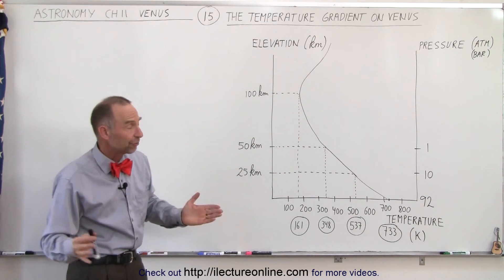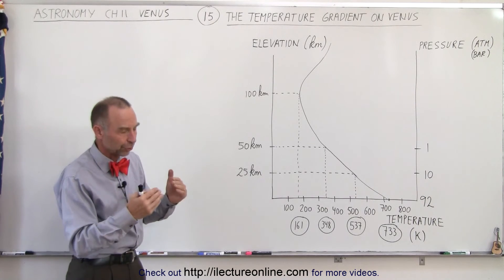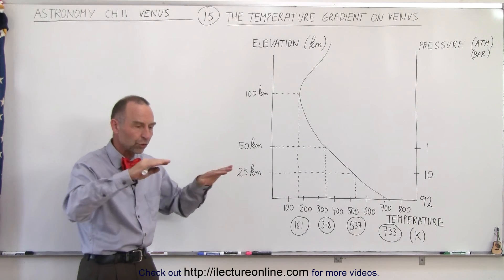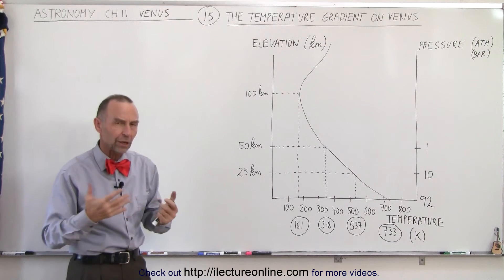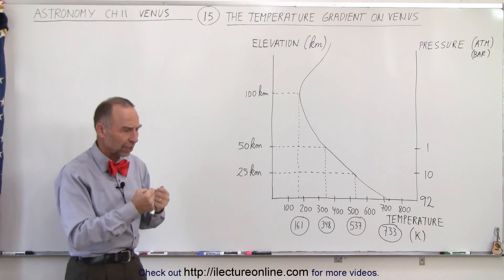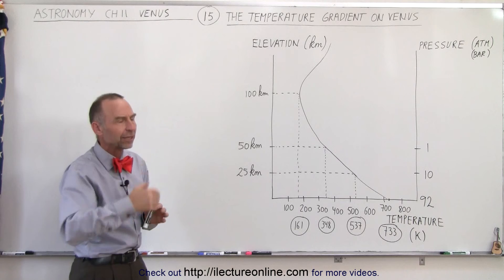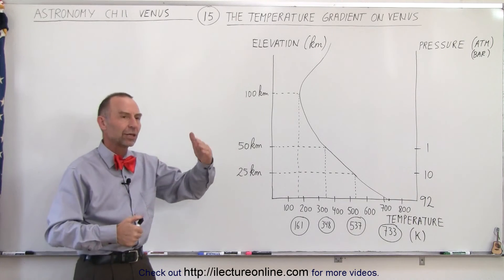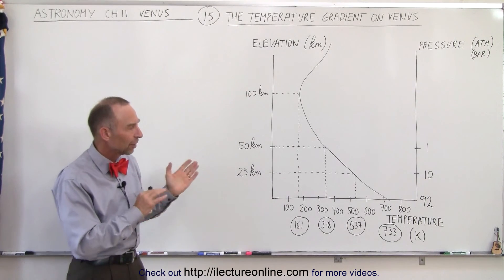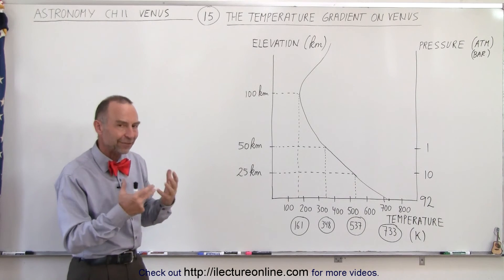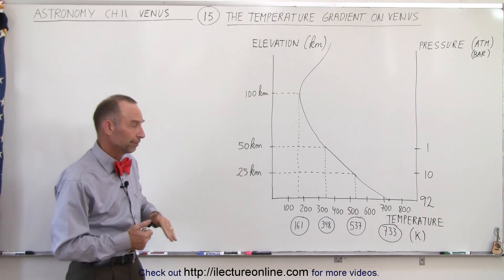Again, very different from what we see on the Earth, for very good reasons. On the Earth, we have the ozone layer, which absorbs the ultraviolet radiation, which is a heat source. Then you get up higher and the temperature drops again. You get up higher still and the temperature increases again. So, a different perspective — different kinds of things happening on Venus compared to the Earth.